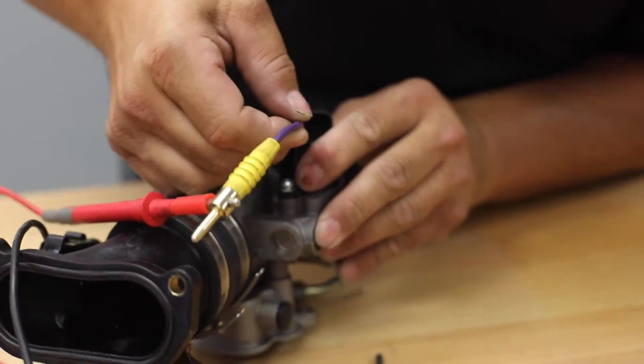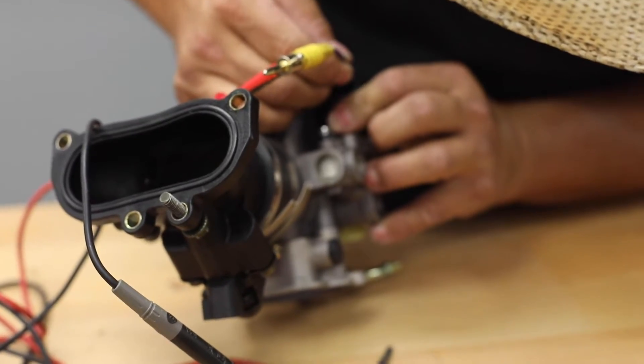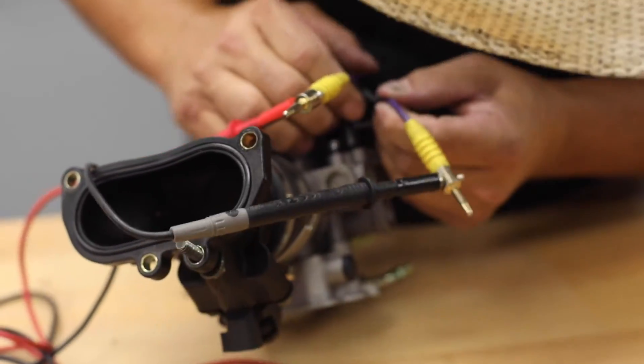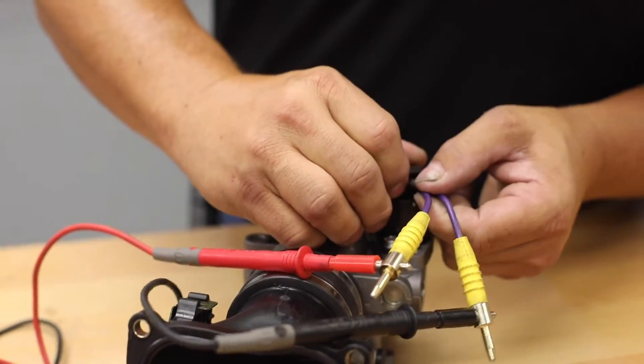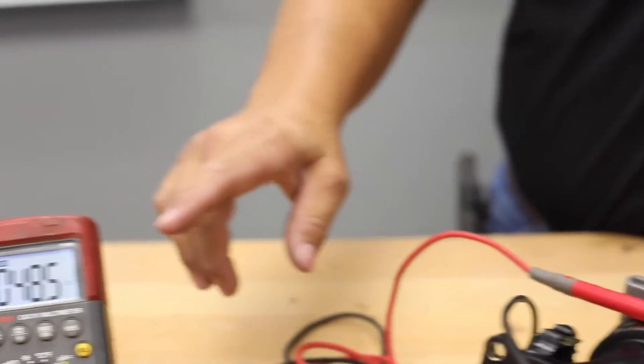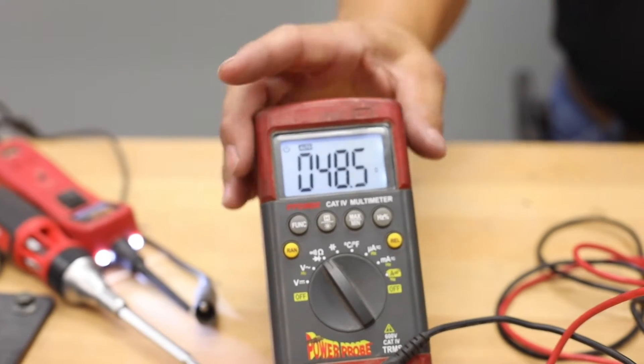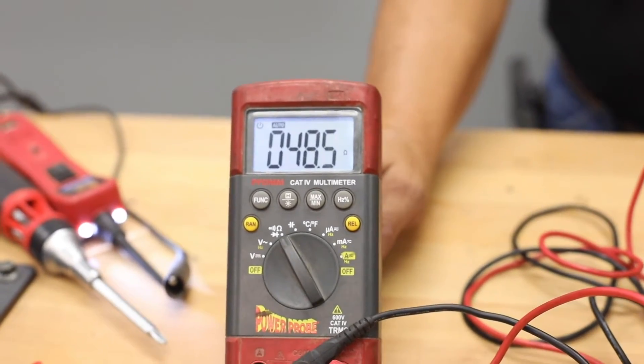If you go test the next one, you're going to go pin number three and pin number four. You should get 48 ohms. This is plus or minus two ohms.